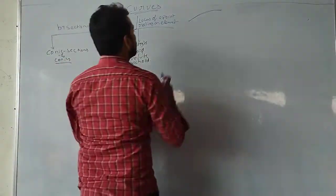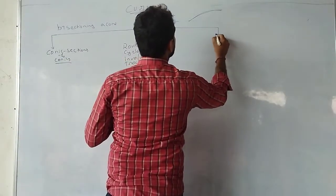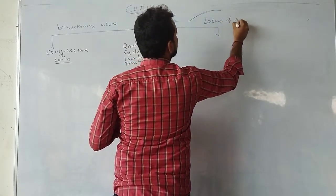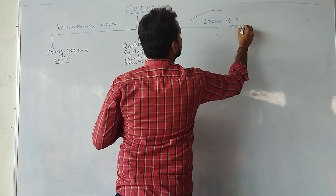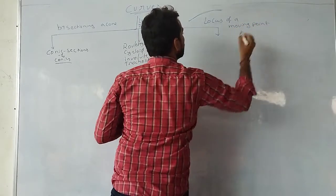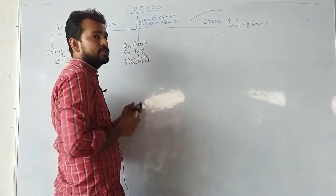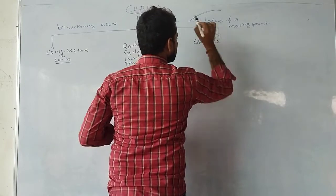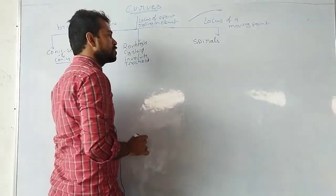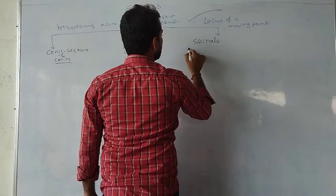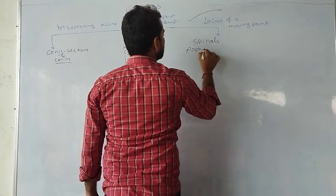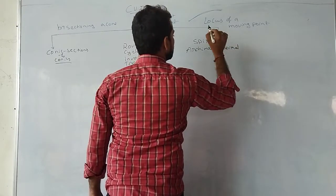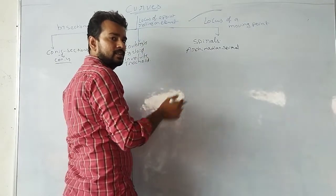The next differentiation is the locus of a moving point, which gives you spirals. In the spiral you will have Archimedean spiral, helix, and like that.